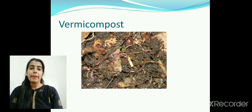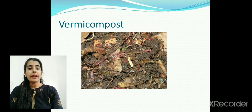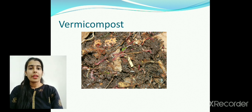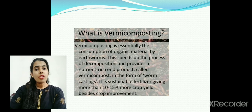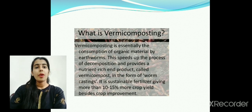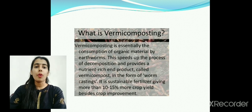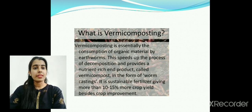The final end product, a black-colored substance, is the manure. This process can be enhanced by adding red worms, which are a type of earthworm. The compost formed as a result is called vermicompost. Vermicomposting is a process in which adding worms speeds up decomposition and provides a nutrient-rich end product called vermicompost in the form of worm castings.